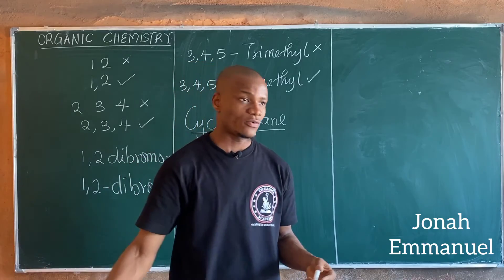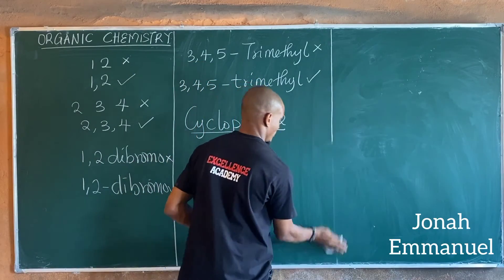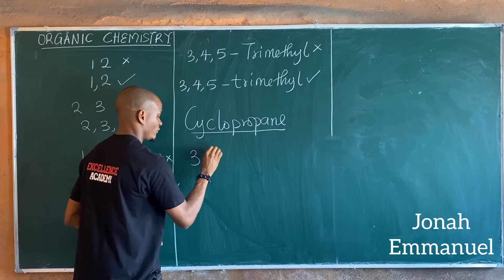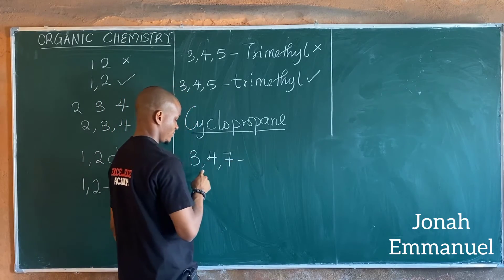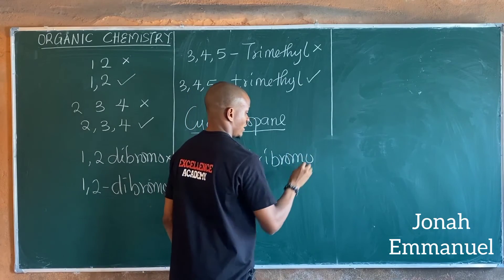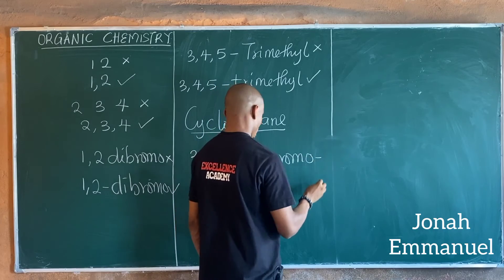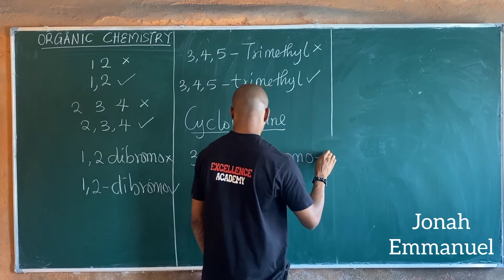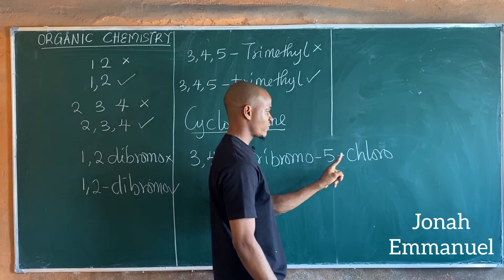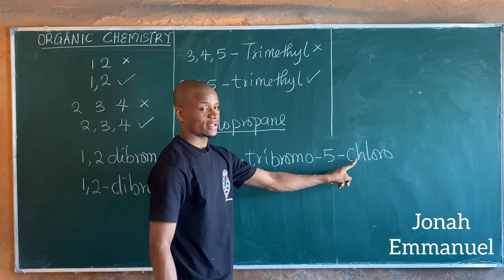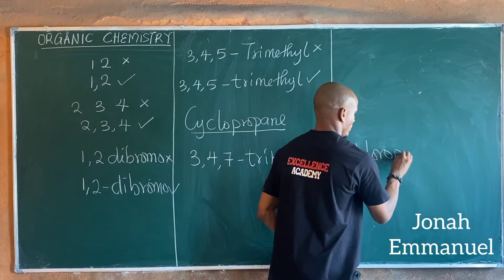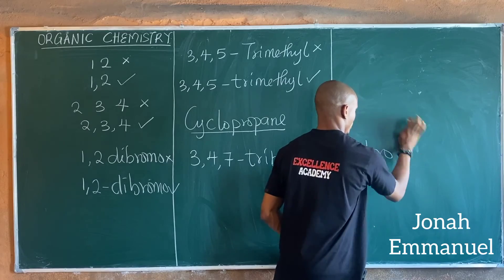Let's take one example. I'm writing a long compound name — observe my writing. I write '2,3,4,7-' — separating numbers from numbers using a comma, then a hyphen — then 'tribromo-', and I want to write a number next so I use a hyphen — '5-chloro'. I've separated letters from numbers using a hyphen, numbers from letters using a hyphen, and all of these are small letters because they are not starting the name. The capital letter is only used at the start of the compound name.